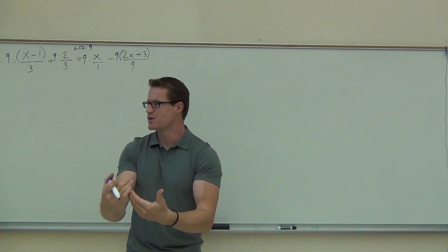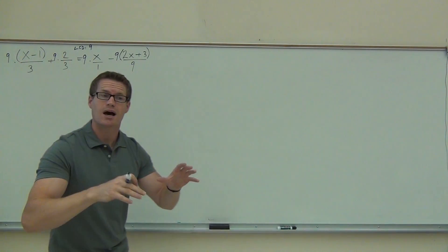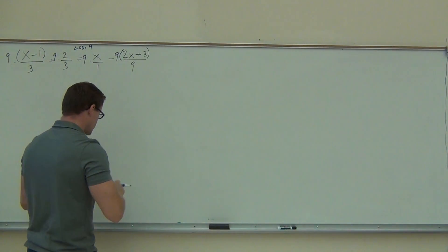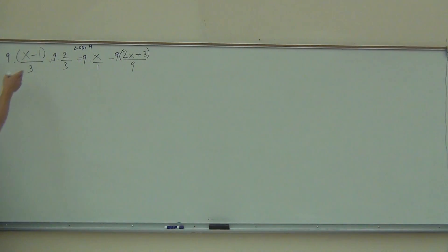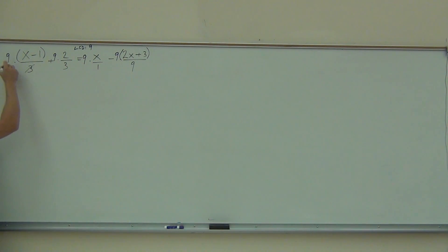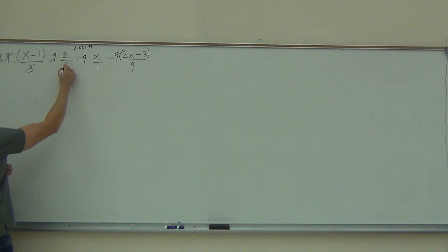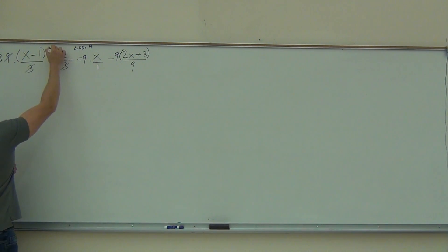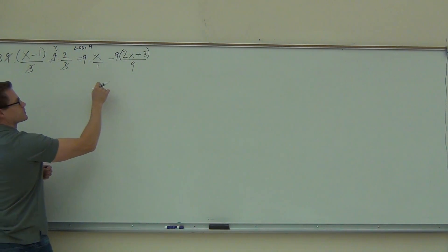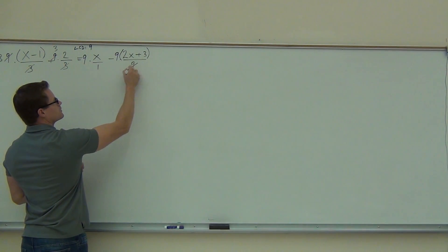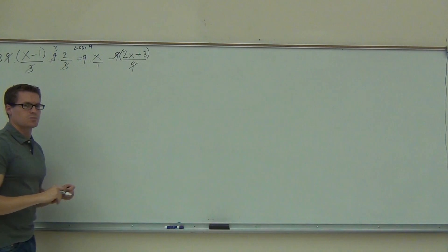In order to cancel out those denominators — right now we're getting rid of denominators. Does anything simplify the first one? It has to, right? We use the LCD. So the 3 is gone. What does the 9 become? What happens here? So those 9's are completely gone.